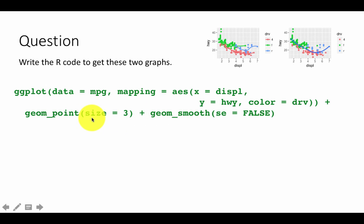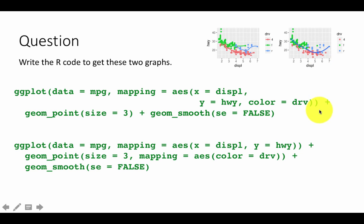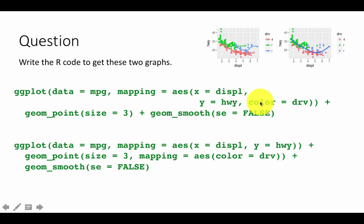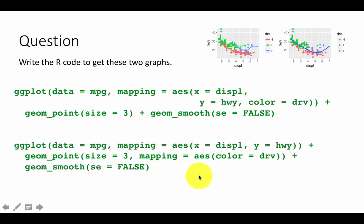So these three — data, x/y, and color — were all common for both geoms point and smooth, and each had its own properties: point had size and smooth had se = FALSE. For the second plot, we put only x and y aesthetics inside ggplot, and in geom_point we say size = 3 outside the aesthetic, and inside the aesthetic we say color = drive. That applies only to the geom_point layer. Then geom_smooth is added separately with just se = FALSE — no color or anything else.